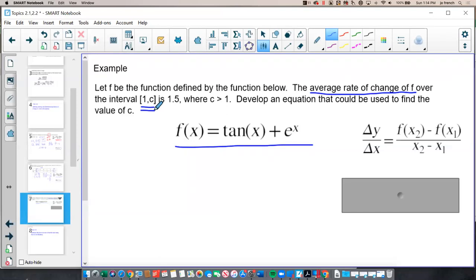Well, the average rate of change equation, as always, is f of x2 minus f of x1 over x2 minus x1. So my first value of x is 1, and then my y value would be f of 1, which I could get from a calculator. Tangent of 1 plus e to the 1, but we'll just keep it as f of 1 for now.